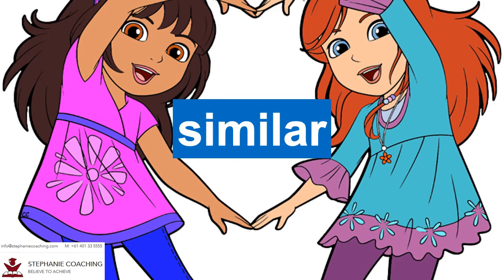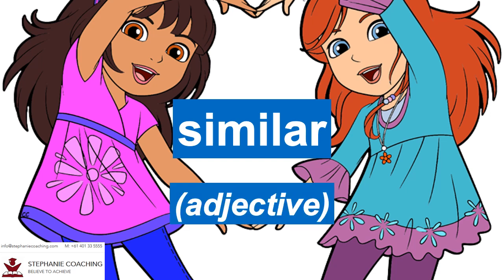Word number five is similar. The adjective similar is for two things that are very alike and almost the same. For example, Simi and Miller look similar because they both have long hair and dress the same way. Don't forget the letter I after the letter M in similar.